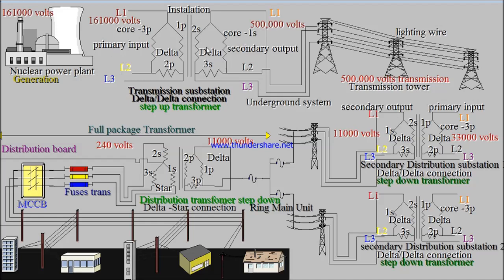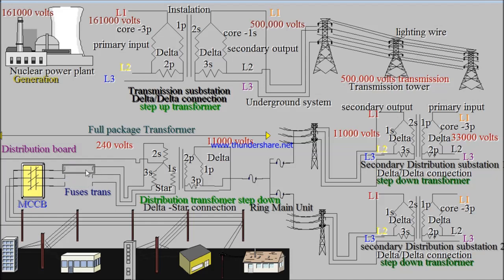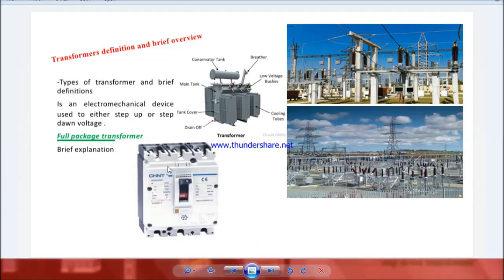We start using the neutral wire from the distribution transformer. These are the fuses — a fuse is simply a safety device. In case of overload, the fuse is going to cut power from one of the phases. And here is the MCCB, the Molded Case Circuit Breaker. This is it — the MCCB circuit breaker. It's a circuit breaker that can handle a large amount of current. We call it MCCB, Molded Case Circuit Breaker. Let's go back to our diagram.